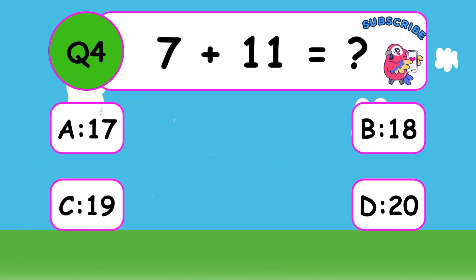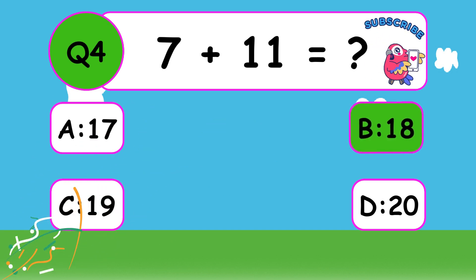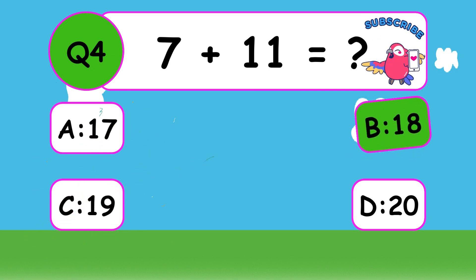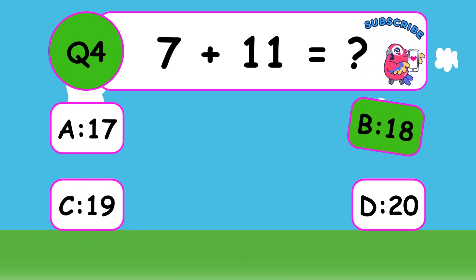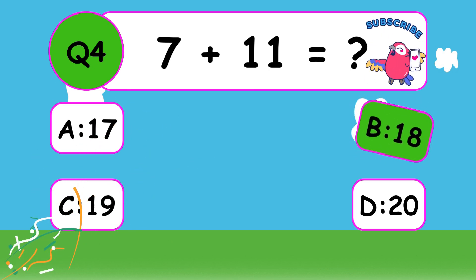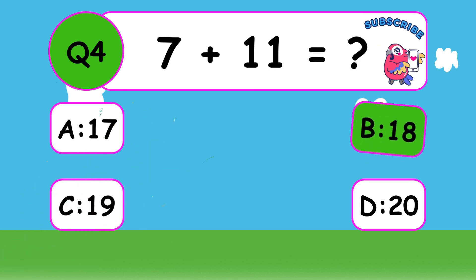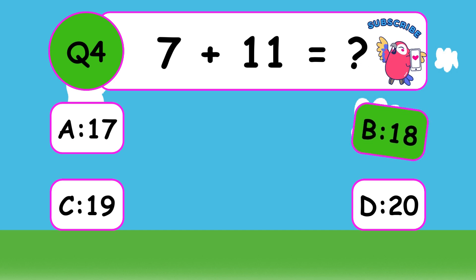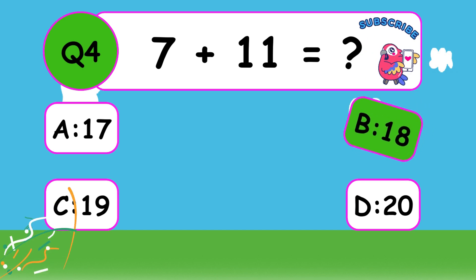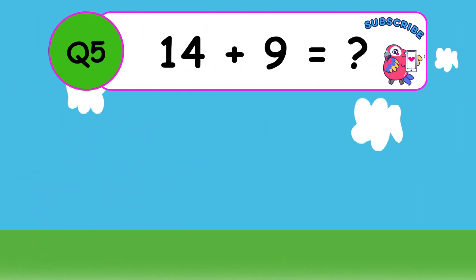What is 7 plus 11? The answer is B, 18. 7 plus 11 equals 18.